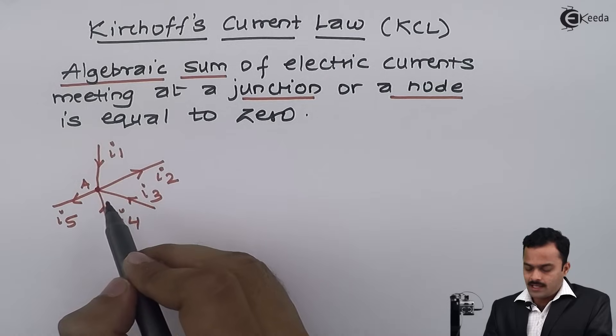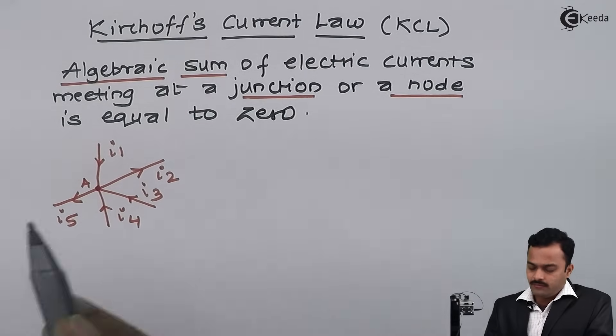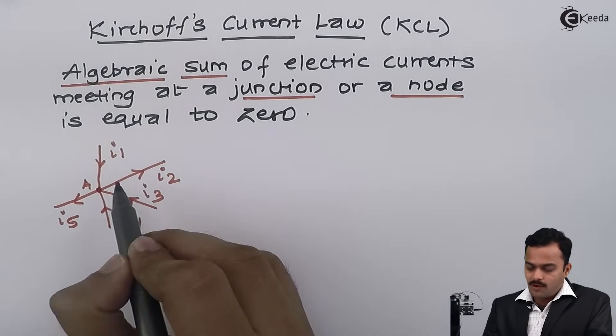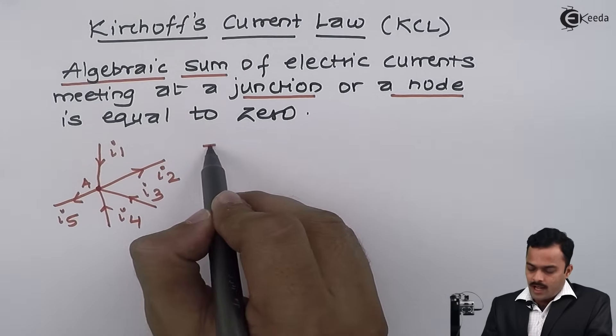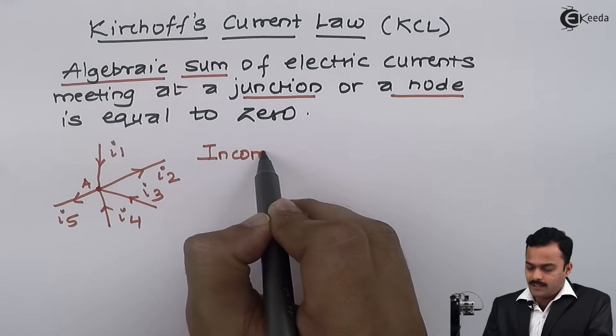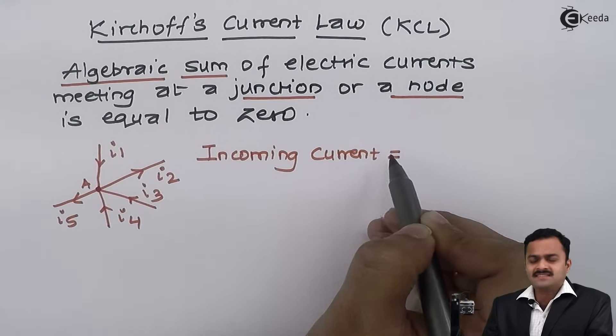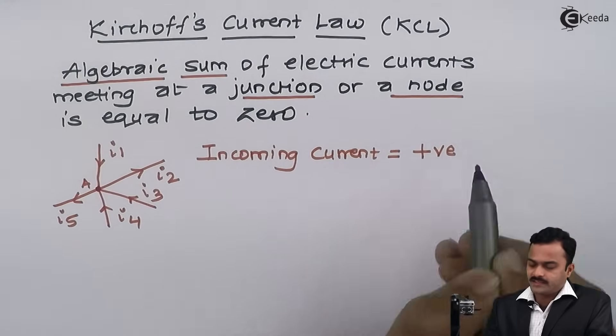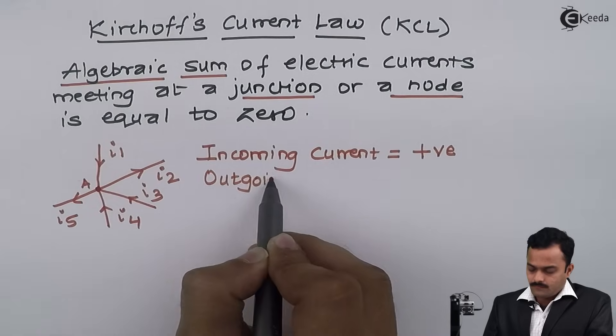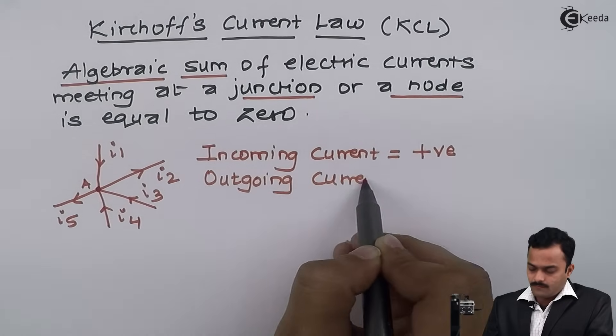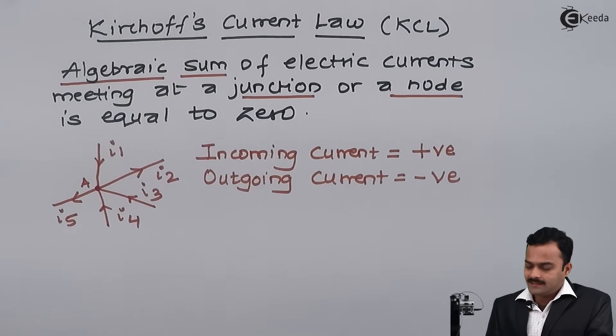The current directions are mentioned randomly to elaborate the concept of incoming and outgoing current. We need to ensure that some currents are incoming to that point and some are leaving. For incoming current, I will consider positive value, and for outgoing current, I will consider negative value.